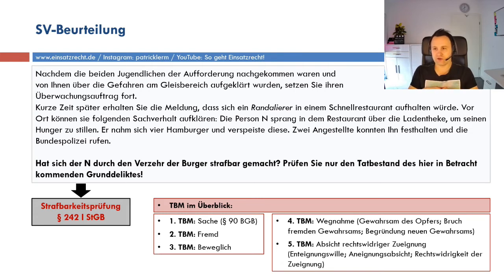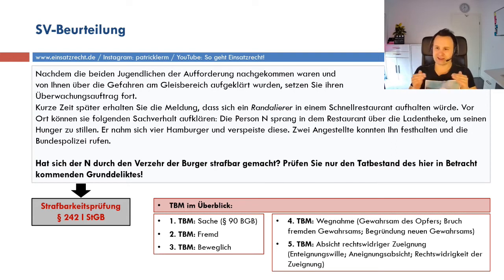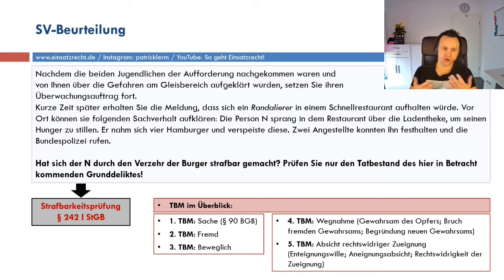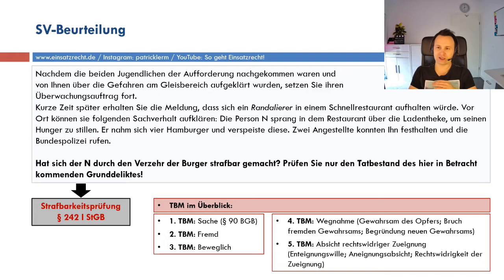Wenn er Beschuldigter ist, muss ich ihn belehren. Der Weg vom Tatverdächtigen zum Beschuldigten ist bei solchen Fällen relativ kurz. Er muss als Beschuldigter nichts zur Sache aussagen, kann aber natürlich Aussagen machen. Der Fall ist hier relativ eindeutig: Er wurde von zwei Angestellten beobachtet, wie er über die Theke sprang, sich die Burger nahm und aß. Die Beweislage ist eindeutig.